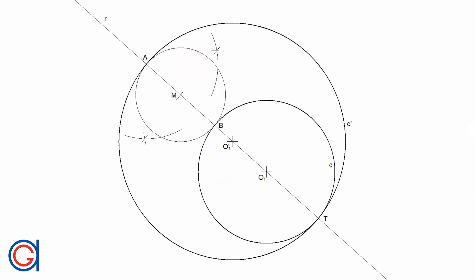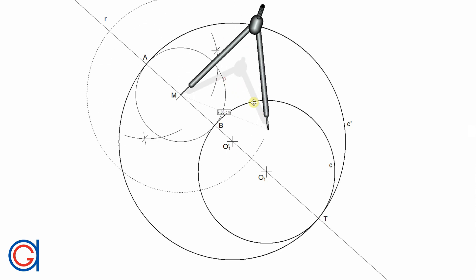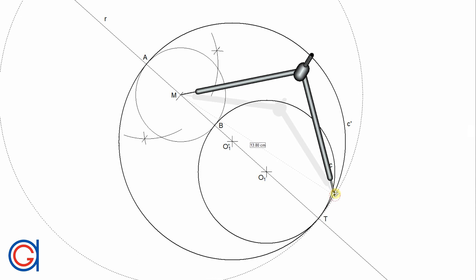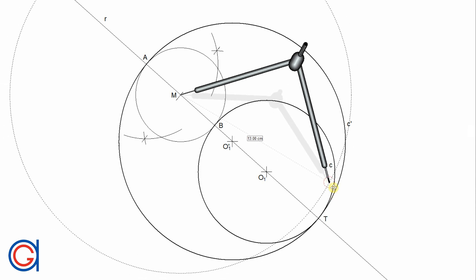Now we have to draw the tangent line segments from the tangent point T to the auxiliary tangent circle that we have just drawn.